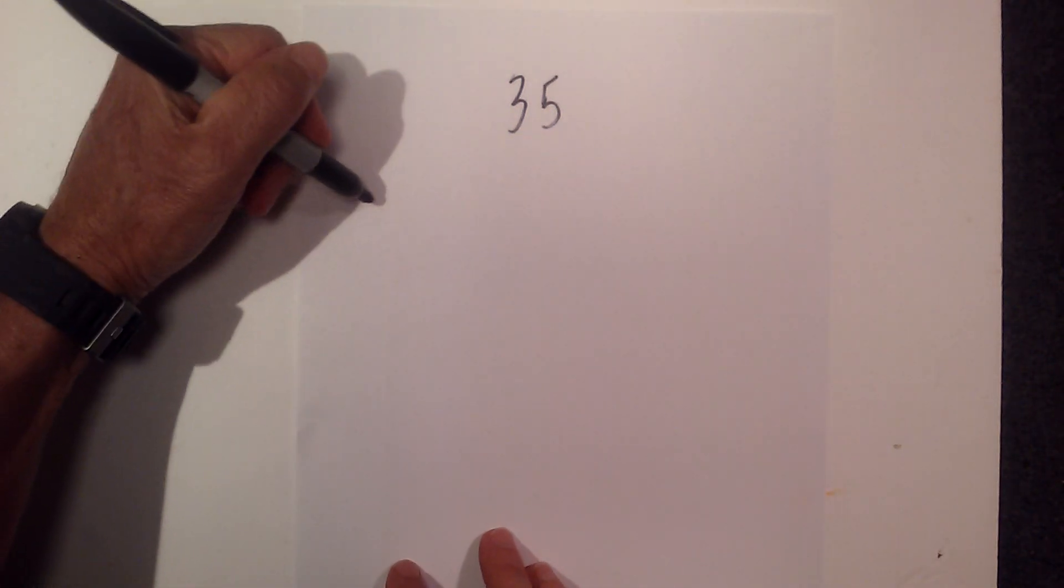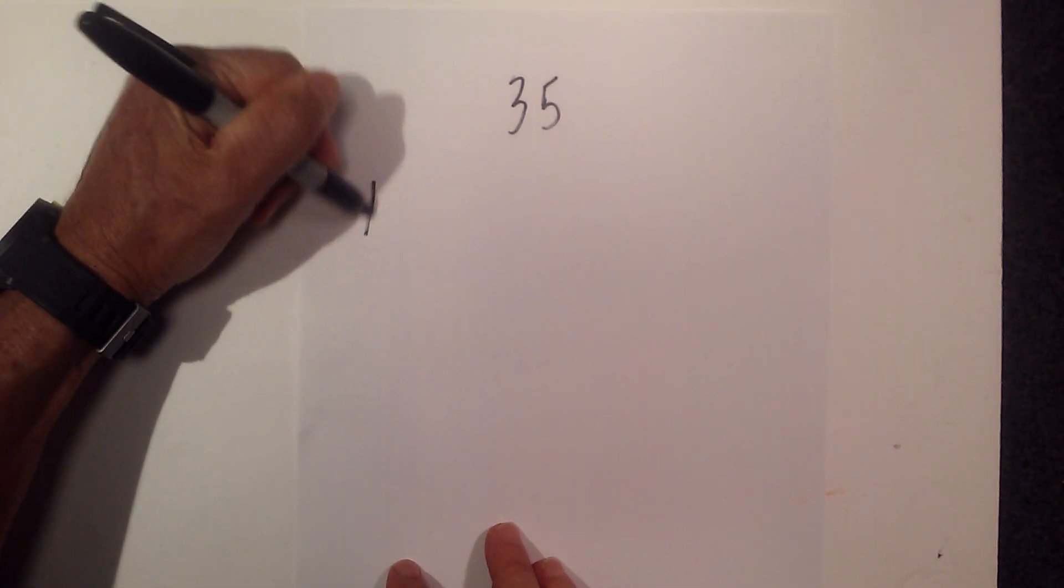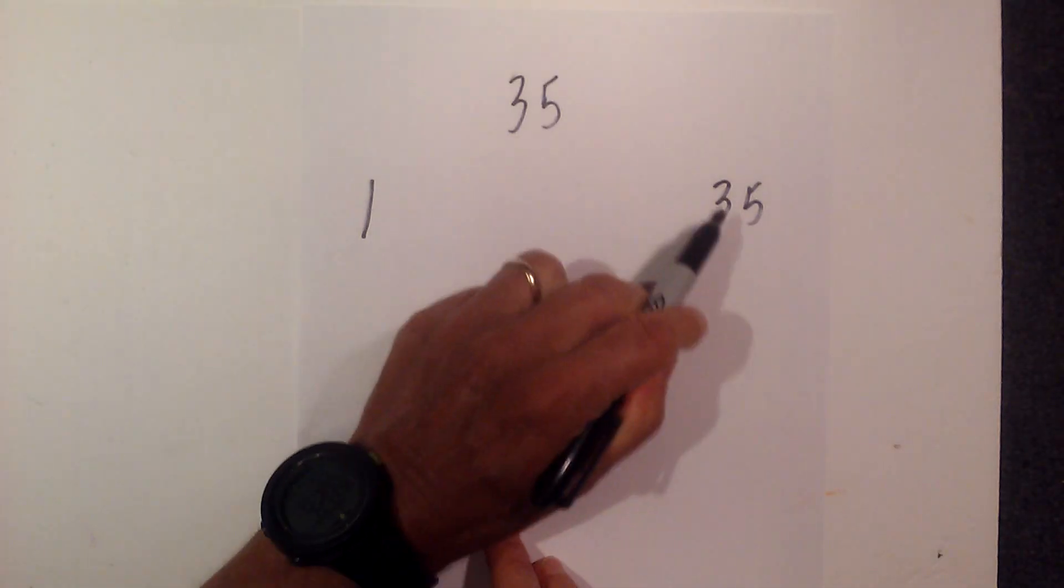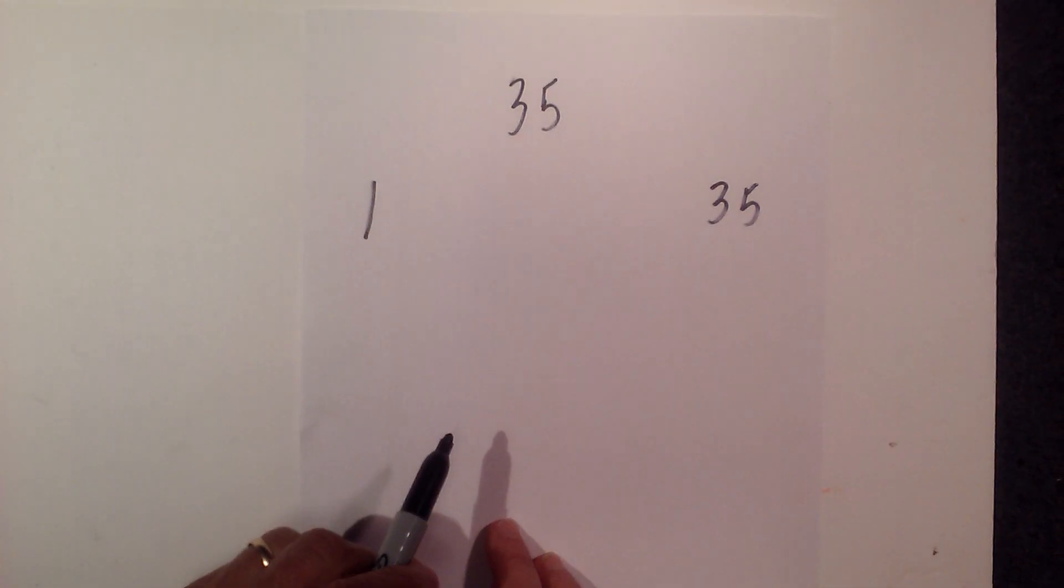In this video let's find the factors of 35. I'm going to begin with 1 times 35 and find all the numbers in between that multiply together to equal 35.